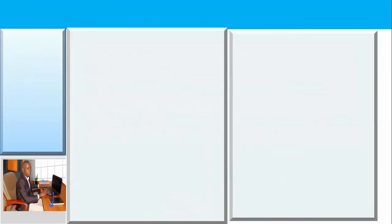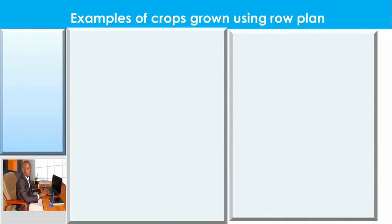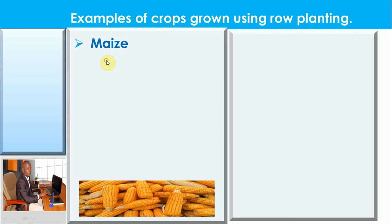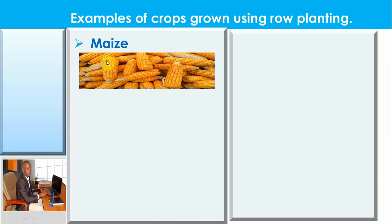Now let us look at some examples of crops planted using row planting. There are very many crops we can plant this way. One example is maize — you prepare your garden and plant your maize in a straight line. When you get maize grain, you go and plant it in the garden using row planting method.